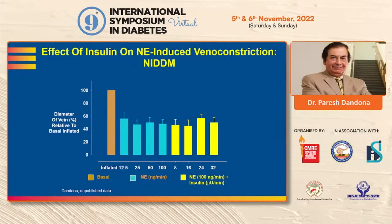In type 2 diabetics who are insulin resistant metabolically, there is also vascular insulin resistance: they do not respond adequately to insulin in terms of vasodilatation.